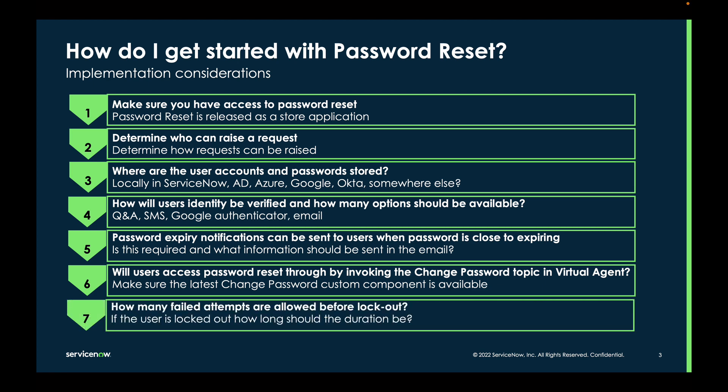How many failed attempts are allowed before lockout? The maximum number of attempts a user can attempt before being locked out is defaulted to three, though this can be changed. If they are unsuccessful, they are locked out for a period of time — the default being 1440 minutes. And if they have been successful in resetting their password, they can be blocked from resetting the password again for a period of time; again, the default is 1440 minutes.